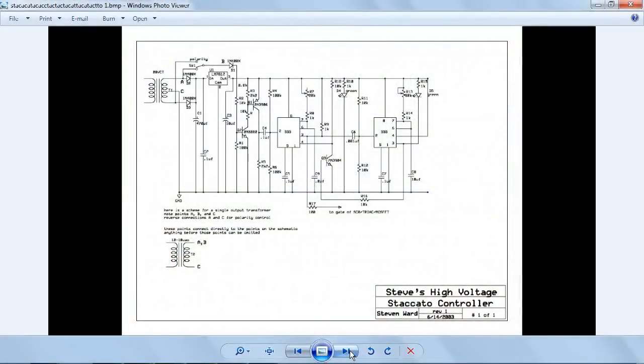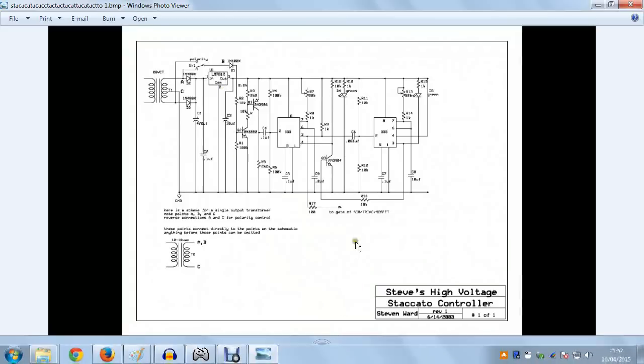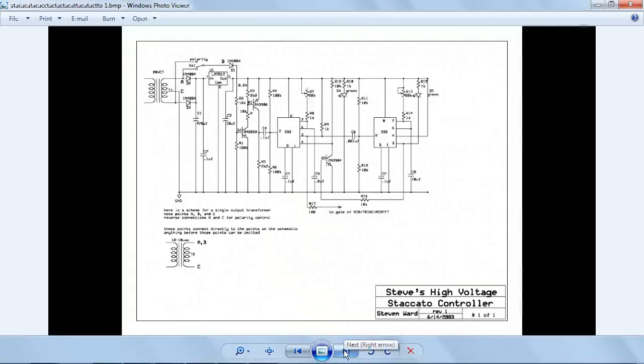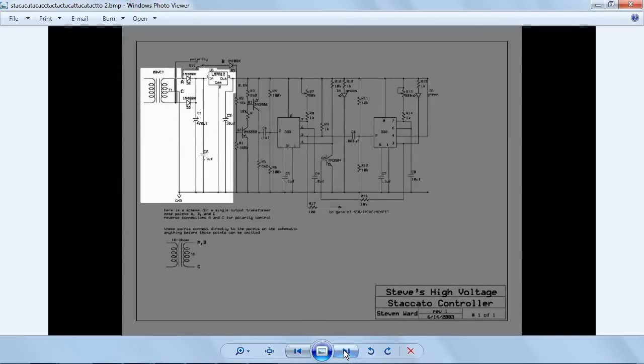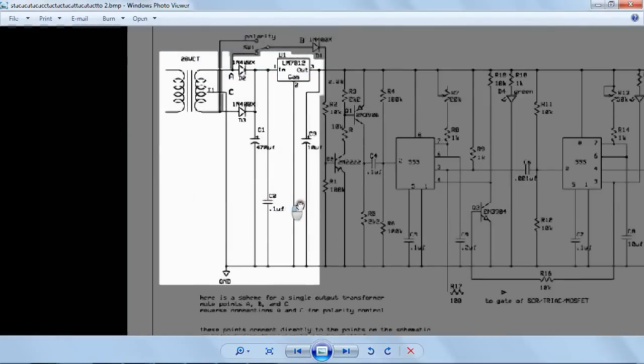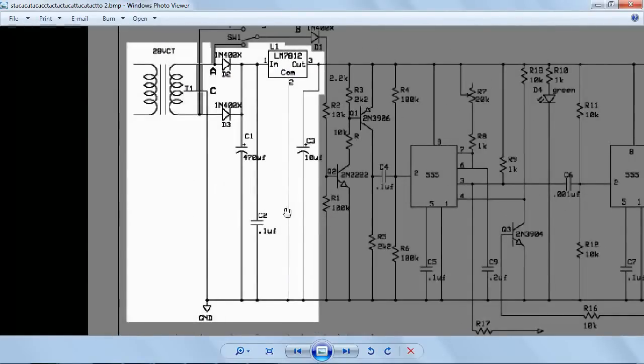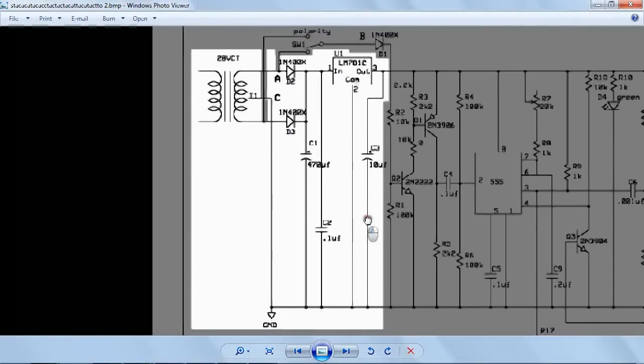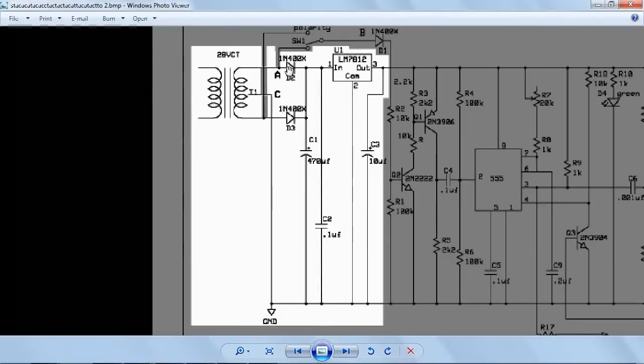Anyway, the power supply for the staccato controller, I haven't drawn because it's included in this schematic here. So what I'll just do is highlight the part of the schematic that actually is power supply. I'll just zoom in on that. It's going to look a bit ugh, but not much I can do about that. So there's the power supply. We've got the transformer over here, and there's the two diodes, voltage regulator, smoothing capacitors, and yeah.